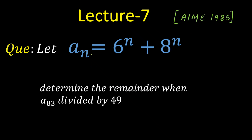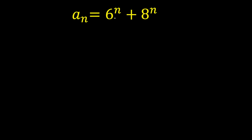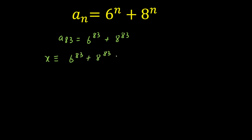The question is: if A(n) is given as 6 raised to the power n plus 8 raised to the power n, find the remainder when A(83) is divided by 49. So A(83) equals 6^83 plus 8^83. If I divide this number by 49, what will be the remainder? Let's say X is the remainder, and we write it in congruence format: X ≡ 6^83 + 8^83 (mod 49).